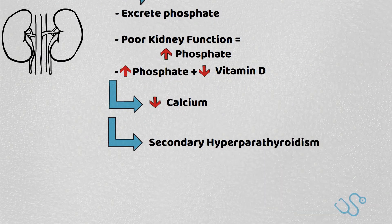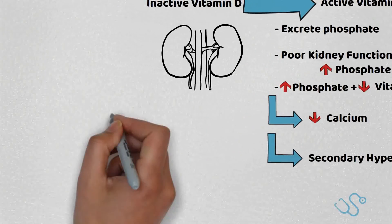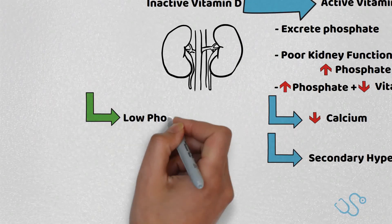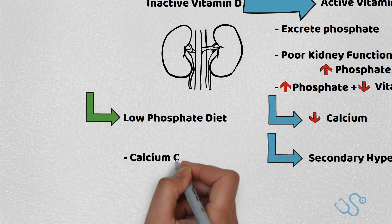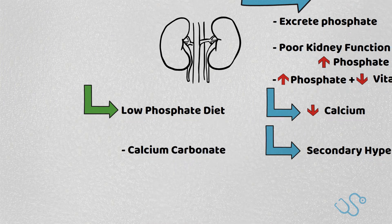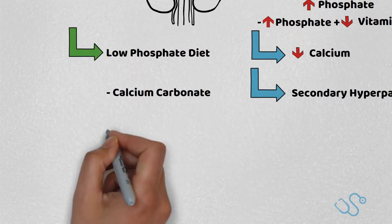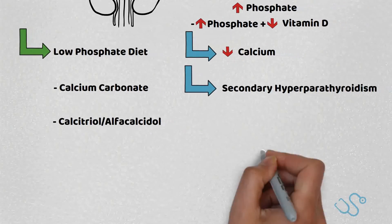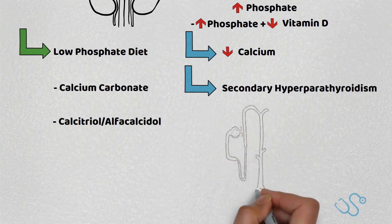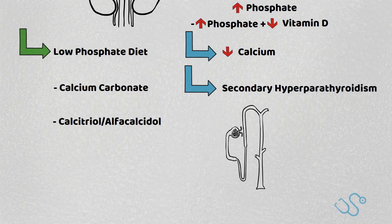So why is this relevant? CKD patients need advice about a low phosphate diet and also phosphate binders to keep phosphate levels in check. Examples of phosphate binders include calcium carbonate or sevelamer. To correct the low vitamin D, calcitriol or alfacalcidol are usually given, which help boost calcium levels as well as suppress PTH.